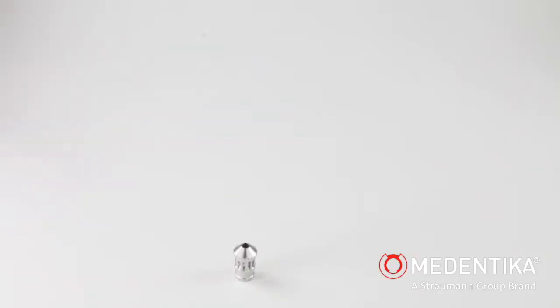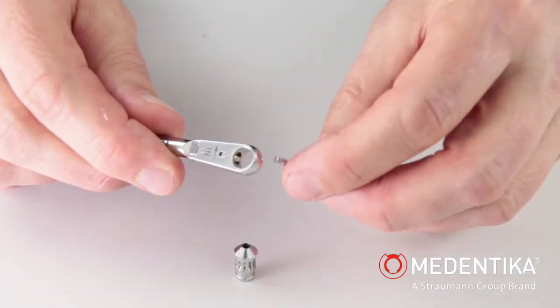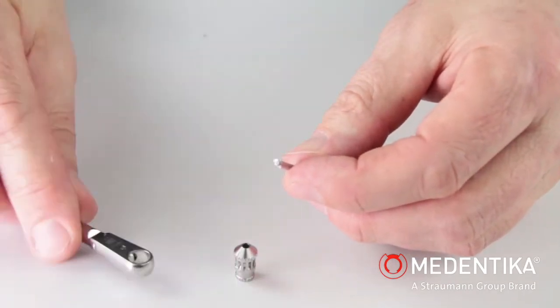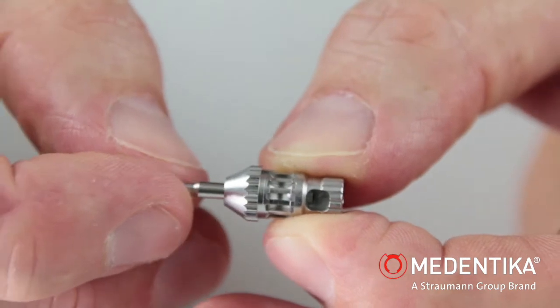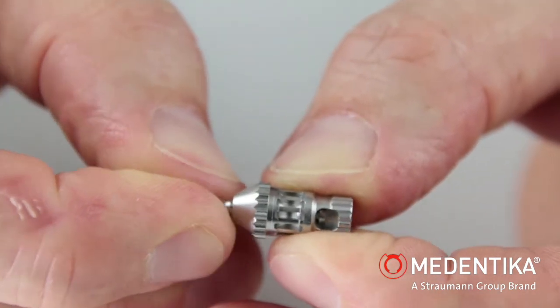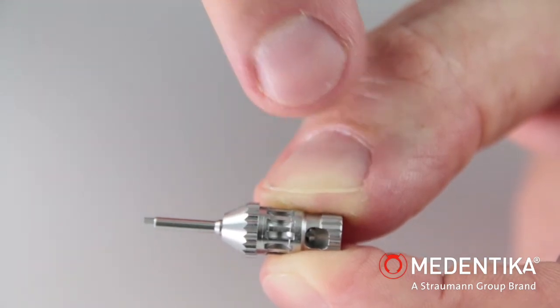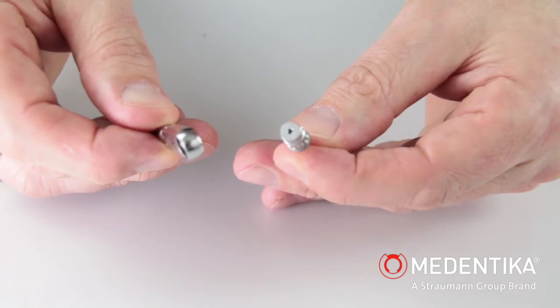The M12 torque ratchet is also converted for ISO shank instruments using the M14 adapter. The ISO shank is inserted in the adapter. A recess at the rear end of the adapter allows the correct fit of the instrument to be checked. The adapter is fitted in the ratchet head.